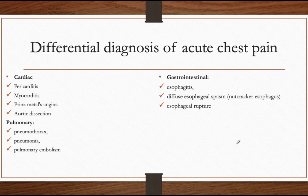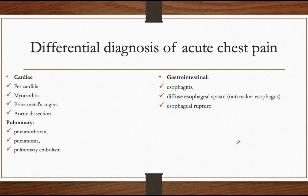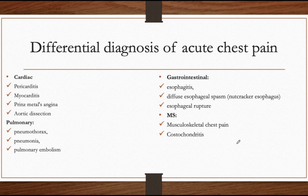Cholecystitis presents with pain in the right upper quadrant or epigastrium. The four F's — fat, female, fertile, and forty — help identify cholecystitis, and a positive Murphy's sign helps differentiate it from myocardial infarction. Musculoskeletal causes include costochondritis, where the patient can point tenderness to the exact location of pain, unlike cardiovascular pain which tends to be diffuse.